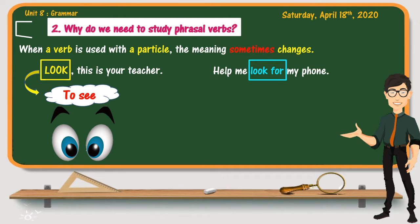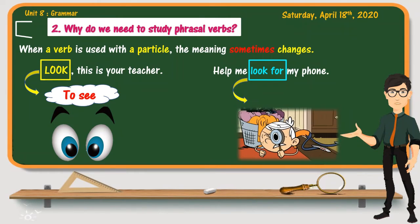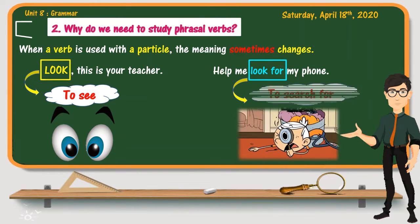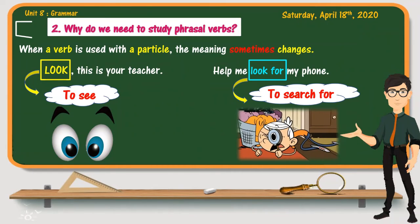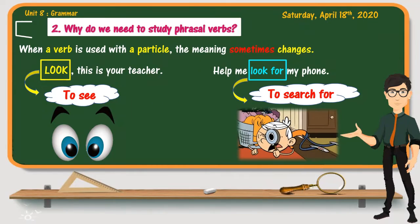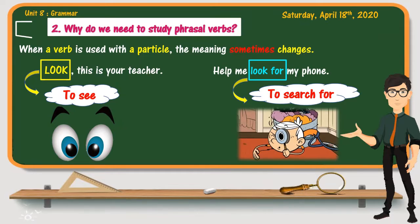'Help me look for my pole.' Notice that the verb here is look for — the same verb to look plus the particle for. Notice that the meaning changes into to search for. So it's no longer to see — the meaning has changed into to search for.